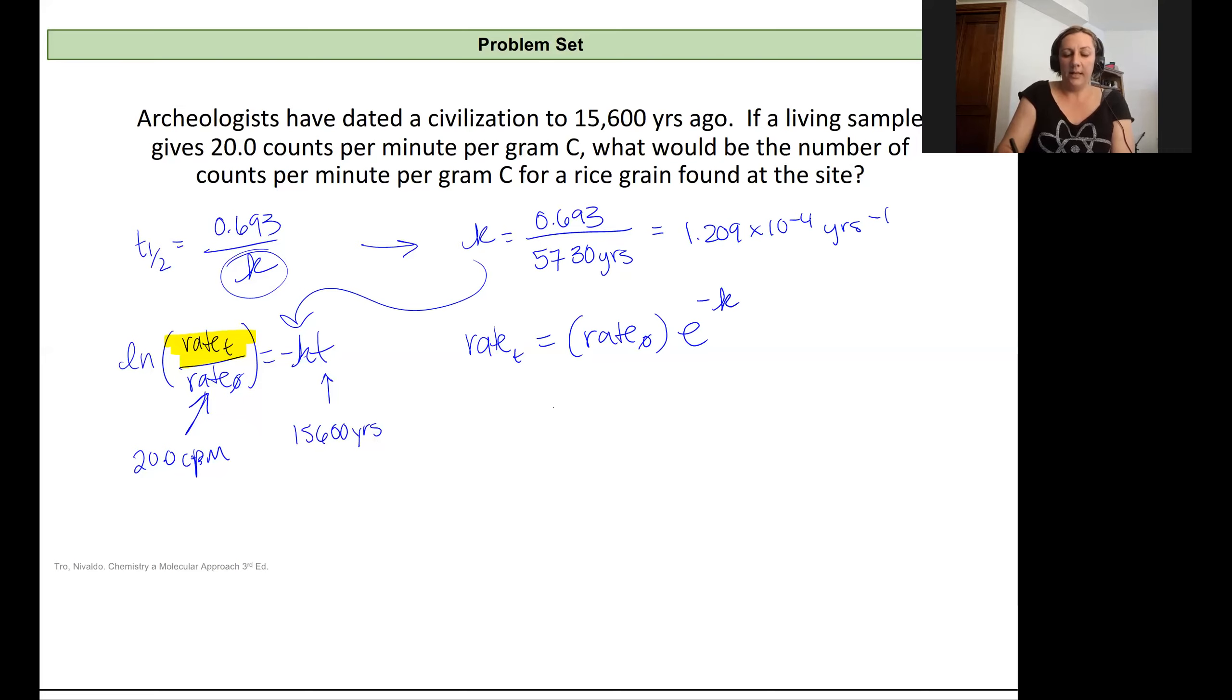So plugging in, that's going to be my 20 counts per minute times E to the negative 1.209 times 10 to the negative 4th inverse years times that 15,600 years. And when I plug that in, I get a value that is 3.03 counts per minute.